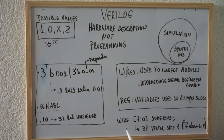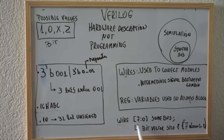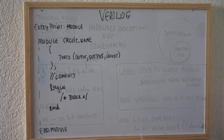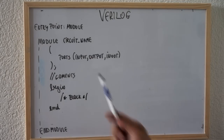Here I show you how to create a bit vector. For instance, here we are using a wire and we are going to create an 8-bit bus. So you say wire, 7 down to 0, and the name of the wire.